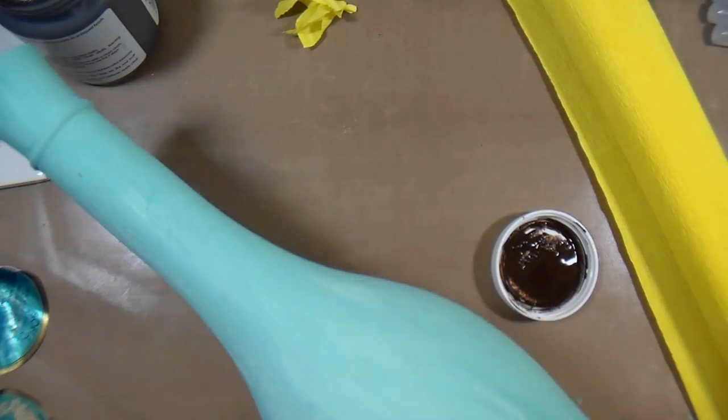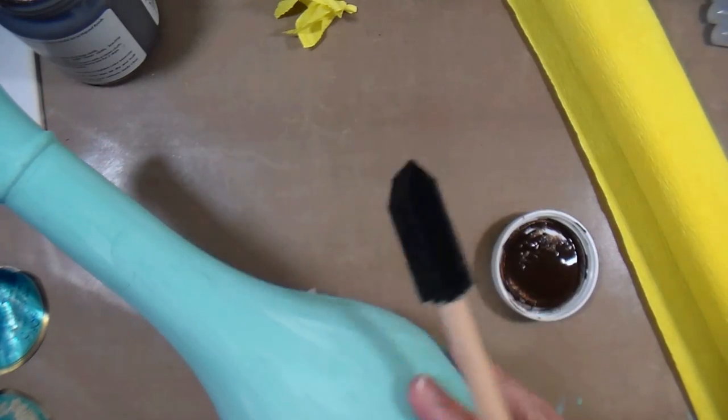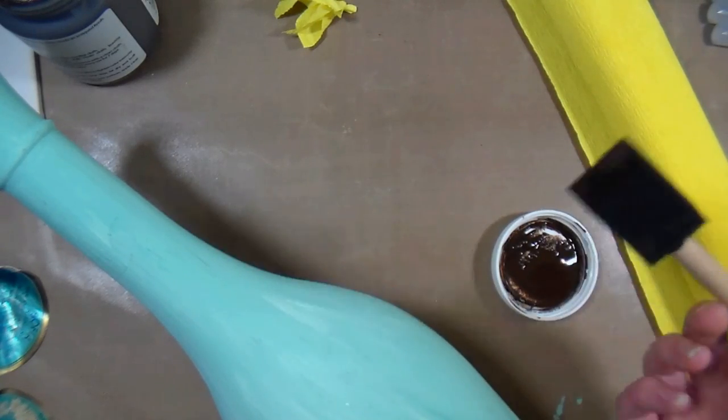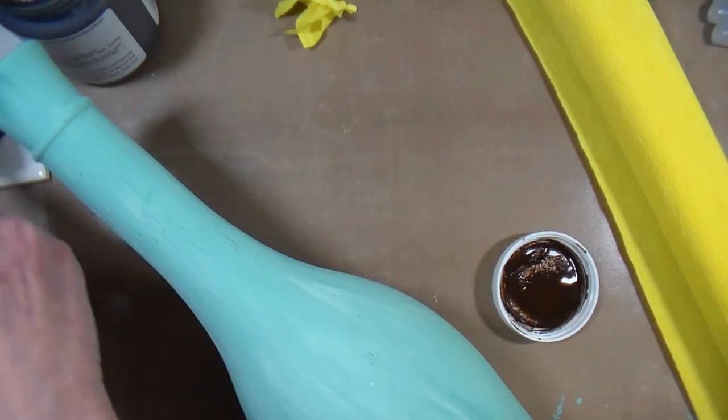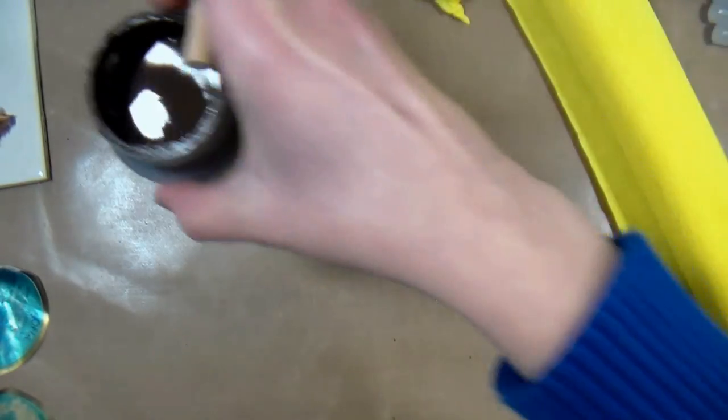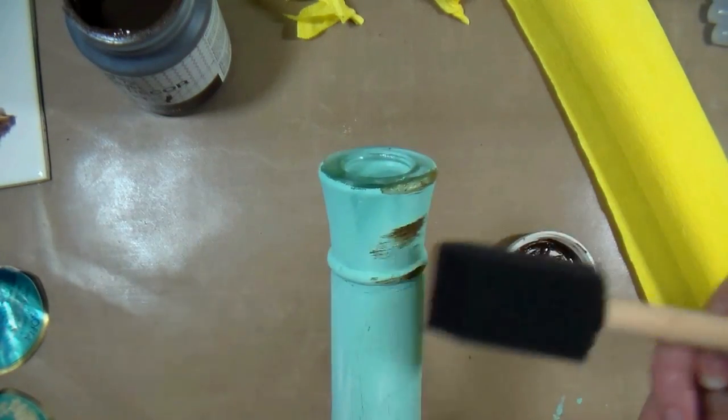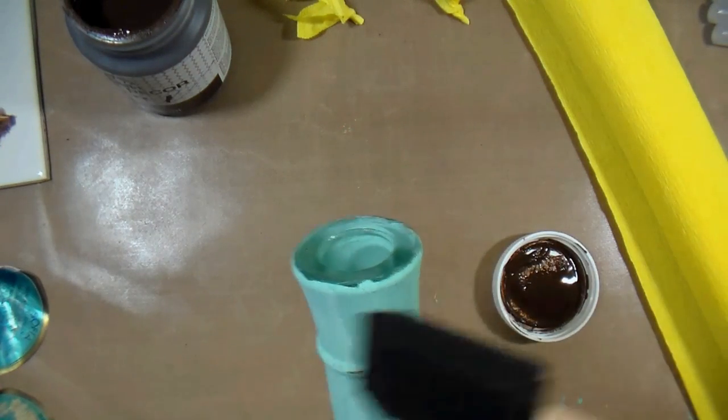Okay my bottle's dry and I wanted to distress it and there's two ways you can do this with the chalk paint. You can either sand some of the paint off of the bottle and then whatever is on the inside will show through, or you could use a little brown paint or I've got this actual wax, it's furniture home decor wax here, and I am just going to have a tiny little bit on this brush and I'm just going to put a little here and there.